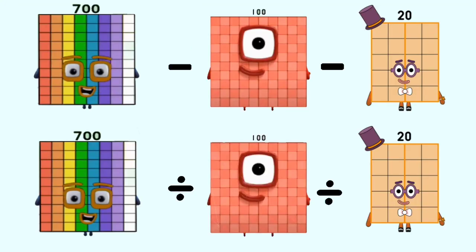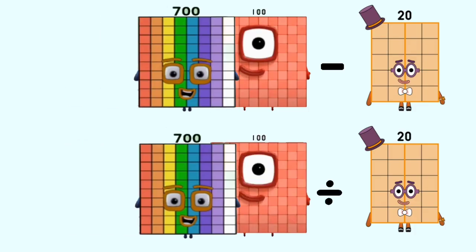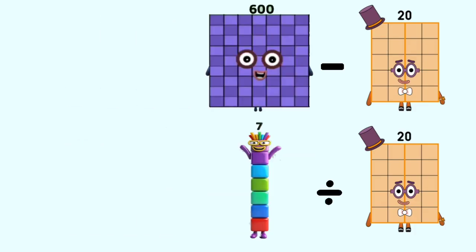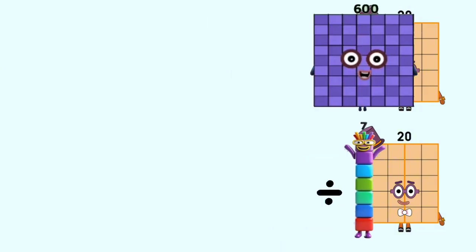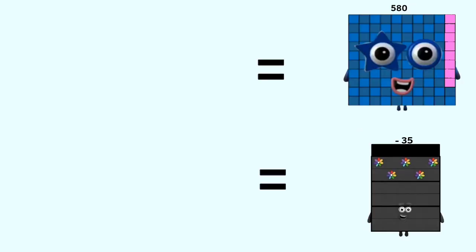Number blocks 700 minus 100 and divided by 100 equal 600 and 7. Number blocks 600 and 7 minus 20 and divided by 20 equal 580 and negative 35.